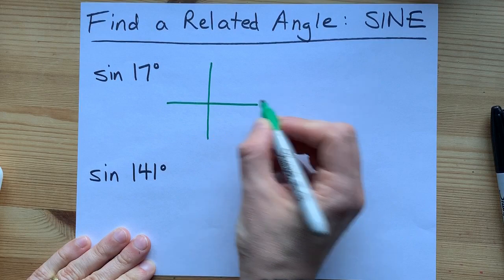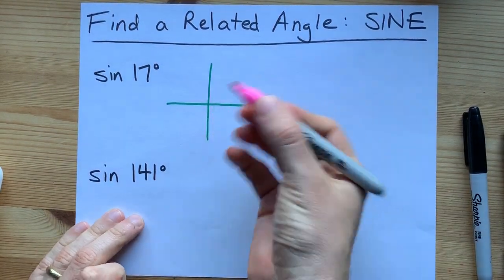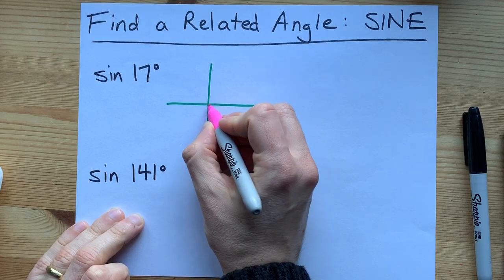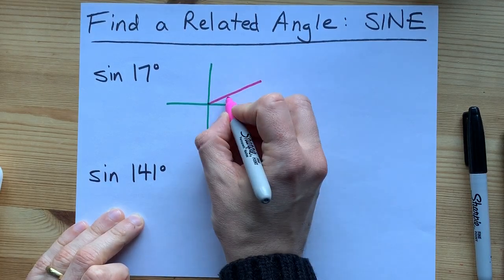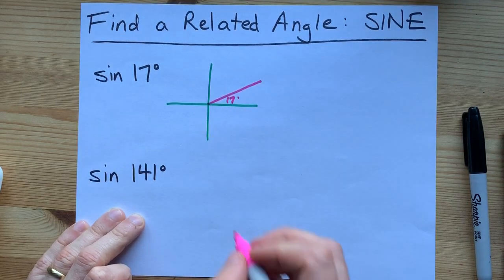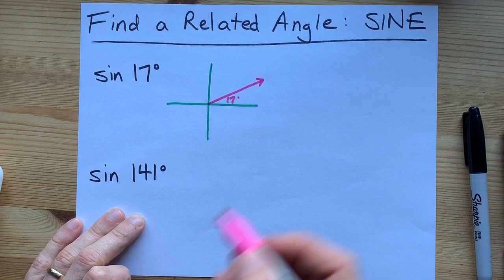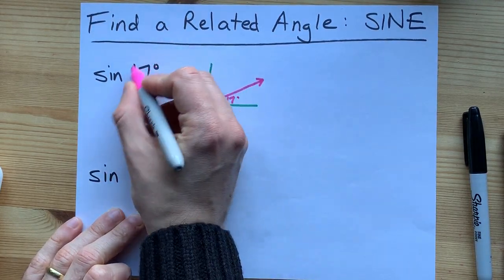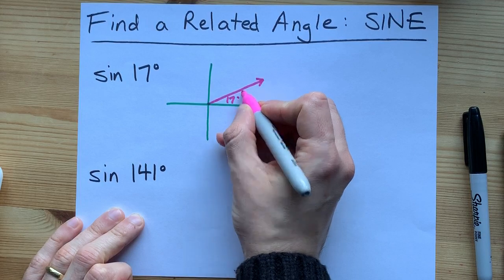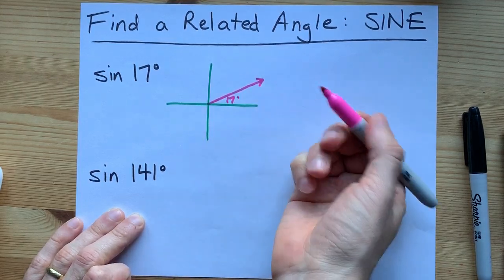Here's what I mean. 17 degrees on the Cartesian plane, or in standard position I should say, goes from the positive x-axis up about 17 degrees. Let me label that for you. This pink line is called the terminal arm, and it always is the angle that you're being asked about deviated away from the positive x-axis. This is called standard position.